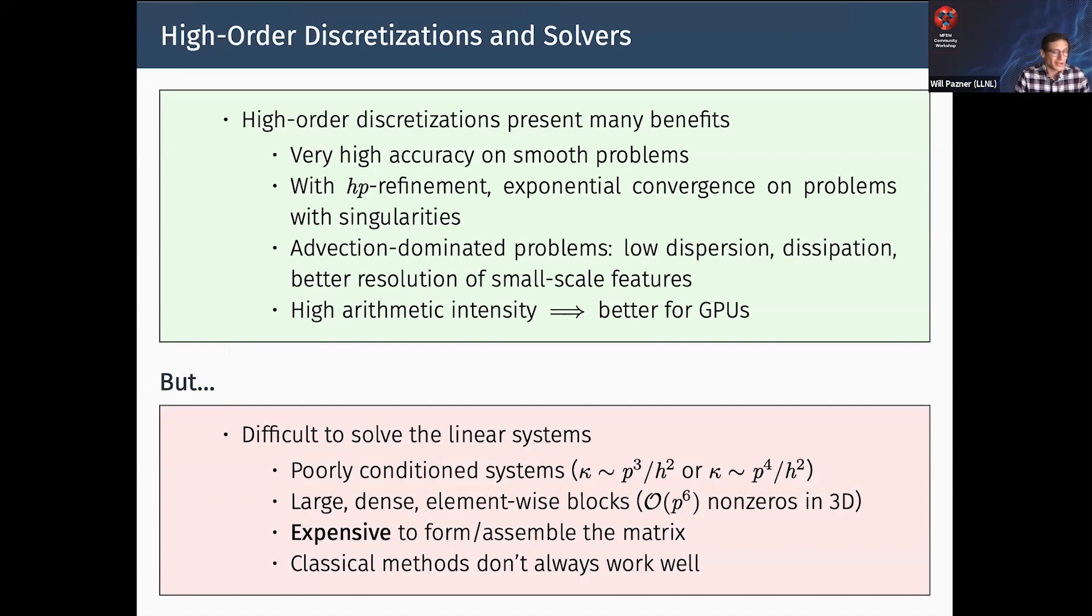The matrices are big and a lot denser than low-order methods. In general, you have order p⁶ nonzeros in 3D. That's a lot of memory on a GPU - too much memory. It's expensive to form and assemble these matrices, at least p⁷ if you're very smart about it. Typically, a naive finite element code will have p⁹ operations in 3D. Even for relatively low orders, this becomes prohibitive.